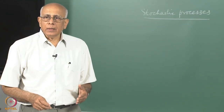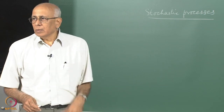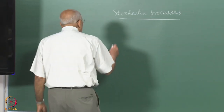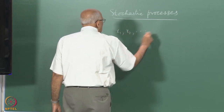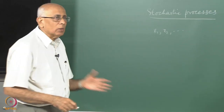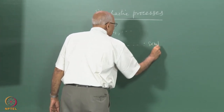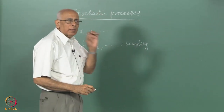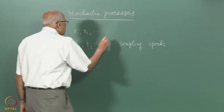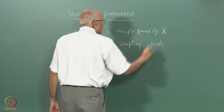The first thing we have to appreciate is that a random process, if you sample it at discrete instances of time, you get a time series with values for the random variable drawn from the sample space. So if we say this random variable could have values x1, x2, and so on, then from this set of values if you sample the process at various instances of time t1, t2, and so on — these are the sampling instances. The general technical term is sampling epochs, and these are elements of the sample space of the random variable x.